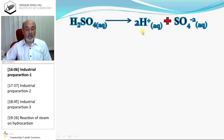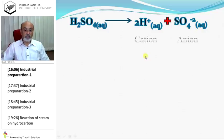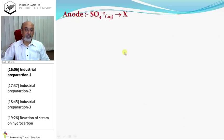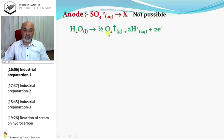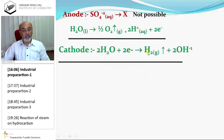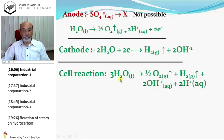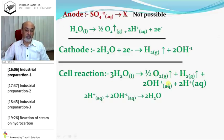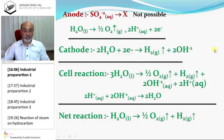Dilute sulfuric acid in solution ionizes to give 2H+ and SO4²⁻. Cations transfer to the cathode and anions go to the anode. At the anode, sulfate ions cannot be oxidized, so water is oxidized releasing oxygen gas and the solution becomes acidic. At the cathode, water is reduced producing hydrogen gas. The net cell reaction is electrolysis of water releasing oxygen gas and hydrogen gas; the acid and base produced neutralize each other.